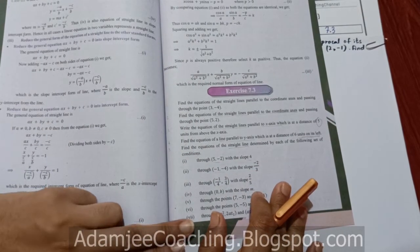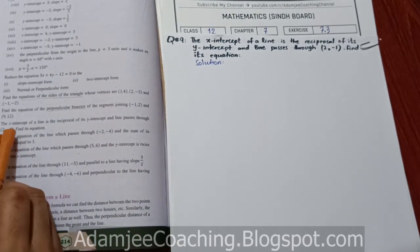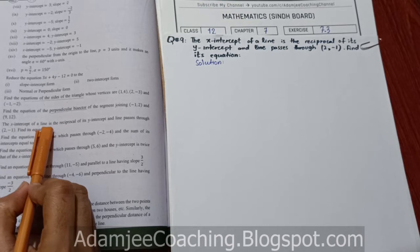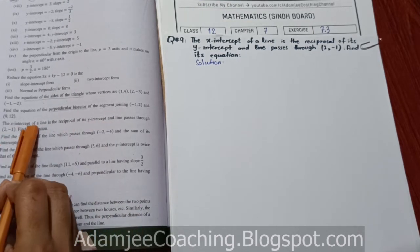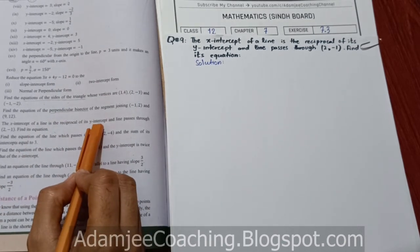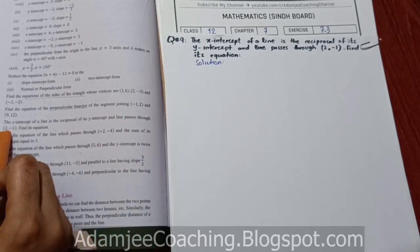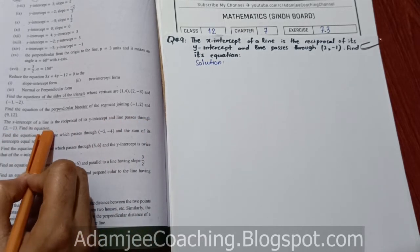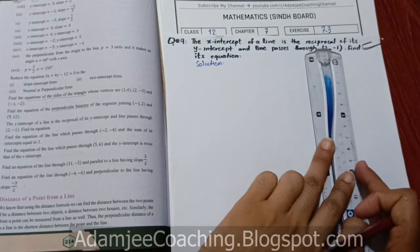Bismillahirrahmanirrahim, Assalamu Alaikum. Class 12 Exercise 7.3 میں آپ کو کرواری ہوں آج کے ویڈیو میں۔ Question number 9 میں آپ سے کہہ رہے ہیں: the x-intercept of a line is a reciprocal of its y-intercept، اور line passing through point 2, minus 1 سے ہو رہی ہے۔ Find its equation.